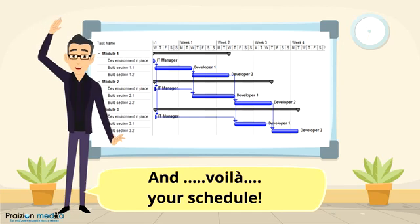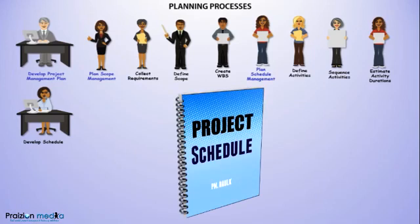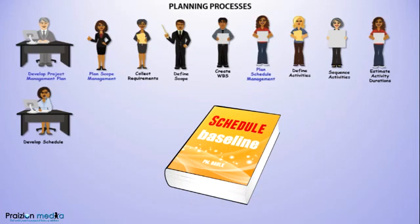The next process is Develop Schedule. This is where the entire schedule comes together and all of the information gleaned so far about milestones, tasks, and durations is put together into a project schedule. When that schedule is approved by management or stakeholders, it is then known as a schedule baseline.